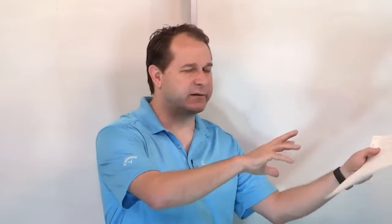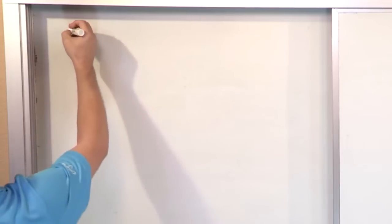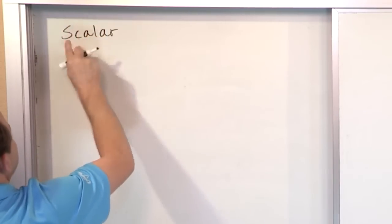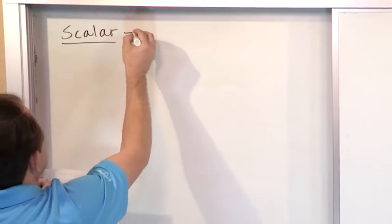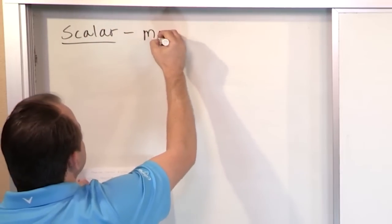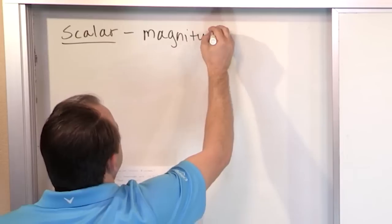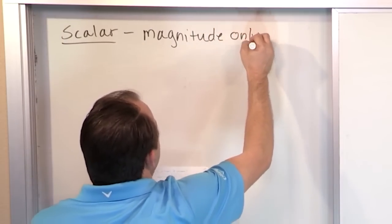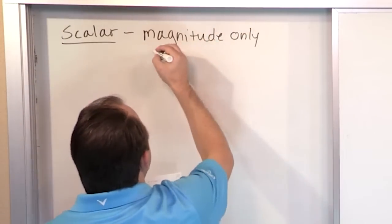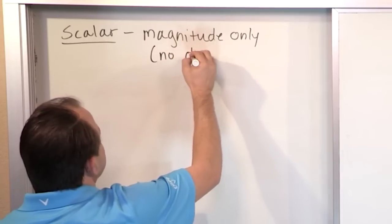We're going to talk about scalars first, then we're going to talk about vectors. A scalar is a quantity — any measurement that only has a magnitude. It doesn't have any direction information; it's just a magnitude. So a scalar is magnitude only — there's no direction info.